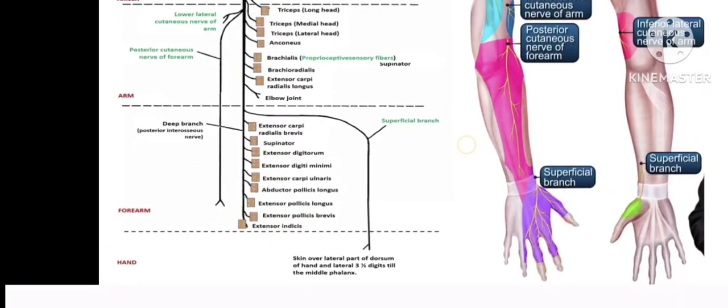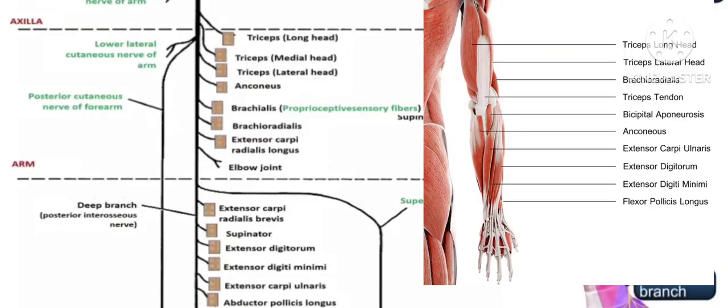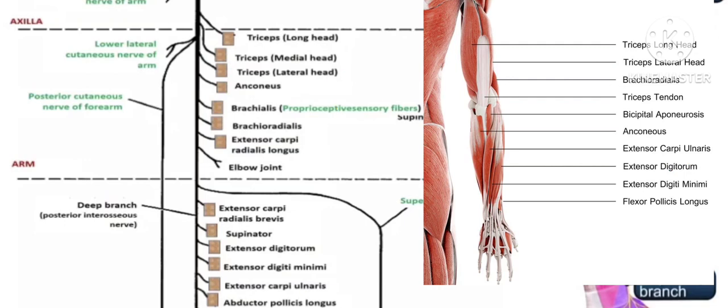Coming to the motor supply: the radial nerve supplies all the muscles of the posterior compartment of the arm and forearm. First, the triceps — long head, medial head, and lateral head. Then anconeus, brachioradialis, and extensor carpi radialis longus.